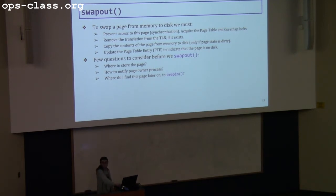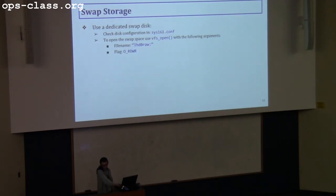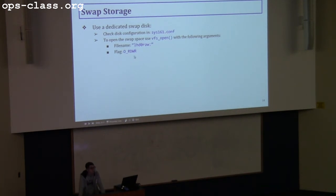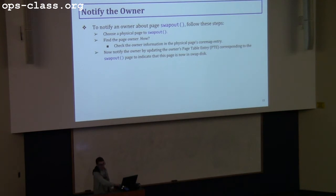Questions you might have about swap out: where to store the page, how to notify the owner, and how to find the page later. For swap storage, things are mentioned in the sys161 configuration file. You have two disks but only need one — enable both. Use VFS open to open the swap disk, passing the file name mentioned in the config file and read-write as the permission.